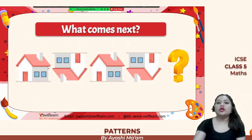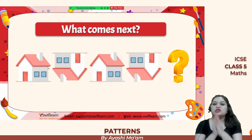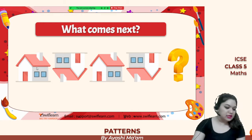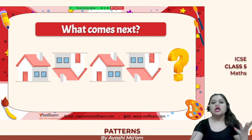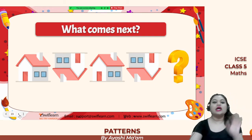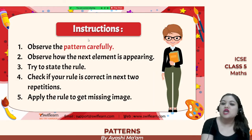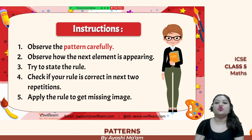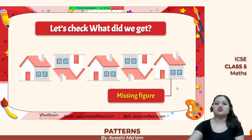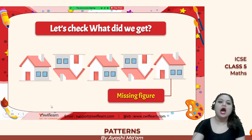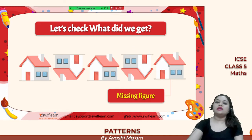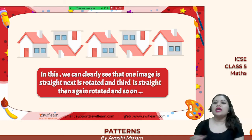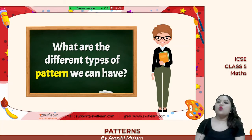Now look at this example: we have a house in normal position, then an upside-down house, then a straight house, then an upside-down house again. After each normal house we have an upside-down house, so after this upside-down house there will be a normal house. The instructions are: observe the pattern carefully, see which element appears after which, state the rule, and apply it to find the missing image. One image is straight, next is rotated, then straight, then rotated — and so on.